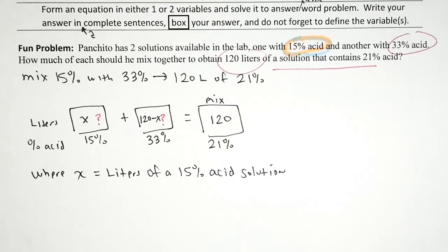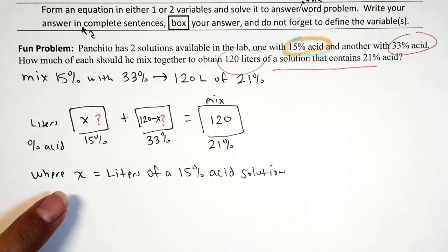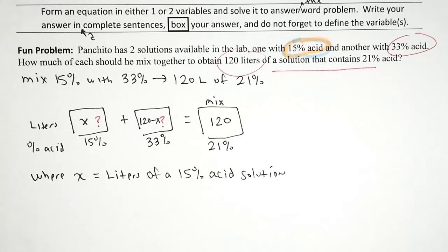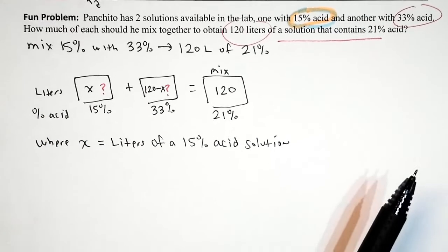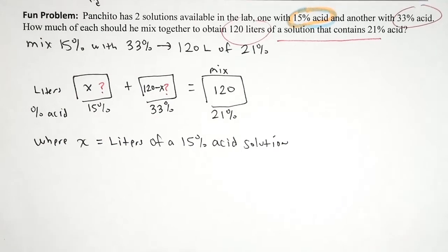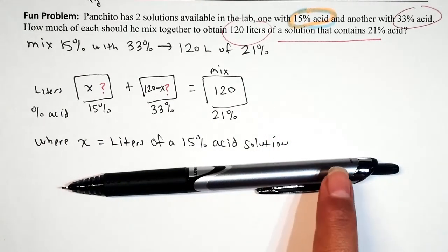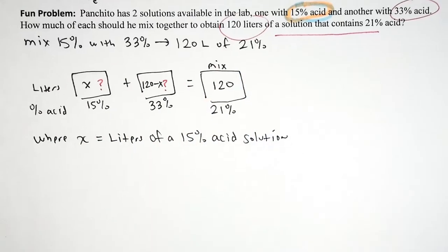Now you can knock out the question, but a lot of students really like the table solution, so we're going to transpose this information into a table. At this point if you feel comfortable going straight to the equation, go for it. We've already defined the variable, so we're good. But I'm going to pretend this box model is gone and go straight to the table. So we always leave one line of space for column headers, and then we'll have a row for the 15% acid, a row for the 33% acid, and a row for the mix.